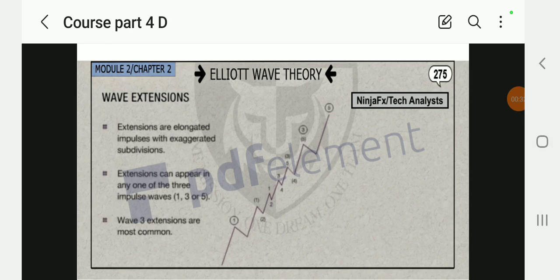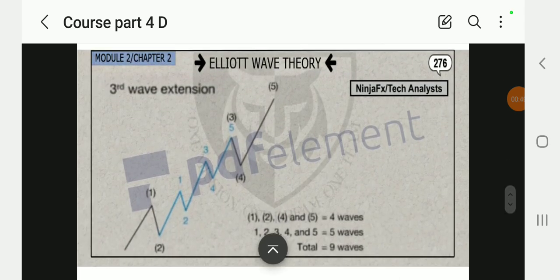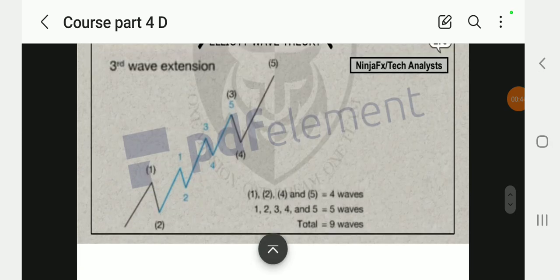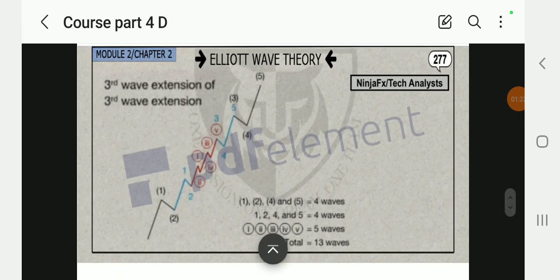Wave three extensions are most common. So let's see guys, let's see what they're talking about with that wave extension. We can see from three and four there was a corrective, and from four to five it broke the third wave, which was known as the final wave, but it extended with the four, five, and this impulse or motive wave. So one, two, four, and five are four waves; one, two, three, four, and five are five waves.